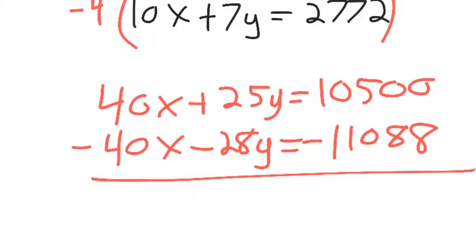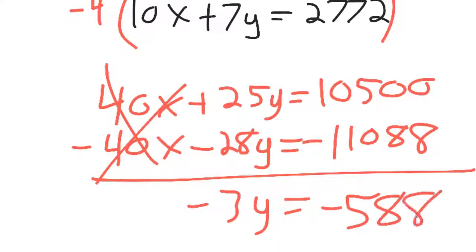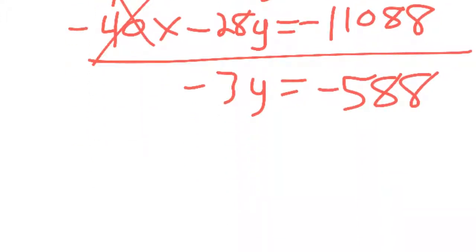And the whole reason we did this is so now you can add the top equation by the bottom equation and make the X's cancel. So when you add the Y's together, you get this. When you add these last numbers, you get negative 588. So the last step is to divide both sides by negative 3. So you get Y is 196.